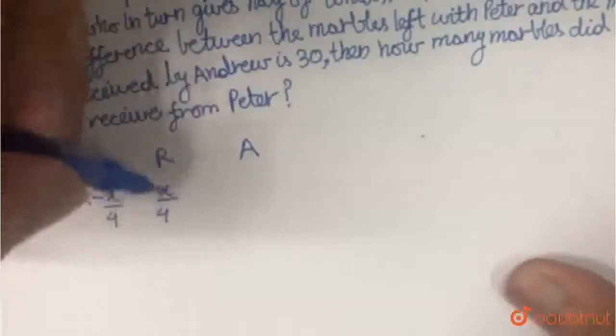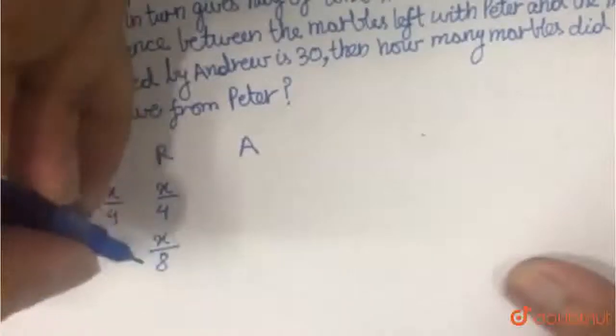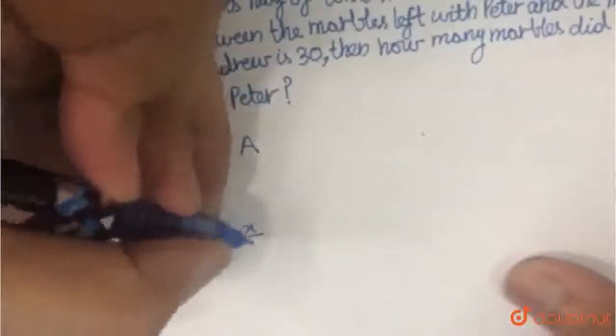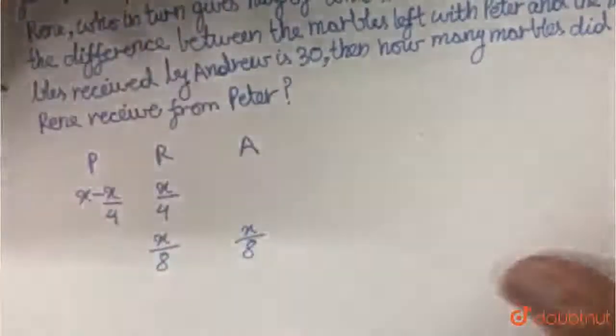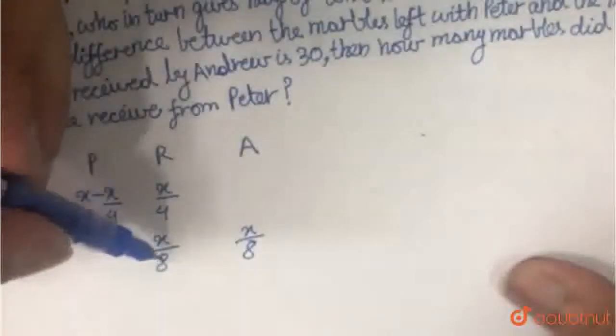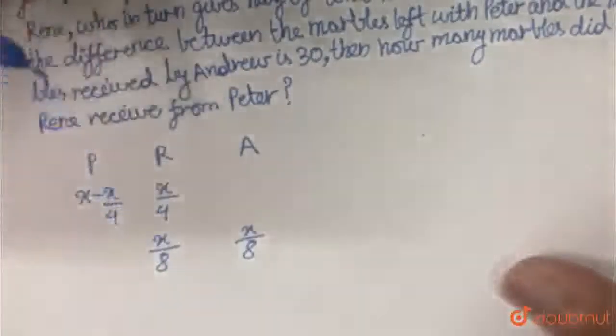Now from these X by 4, she gives half, that is X by 8, to Andrew. And she herself keeps half. That is, X by 8 she gives to Andrew and X by 8 she keeps for herself.